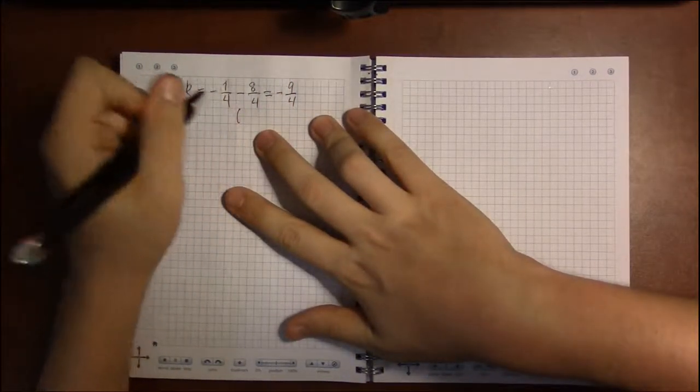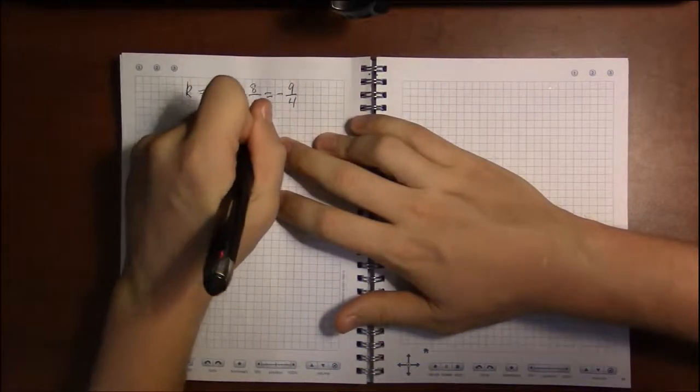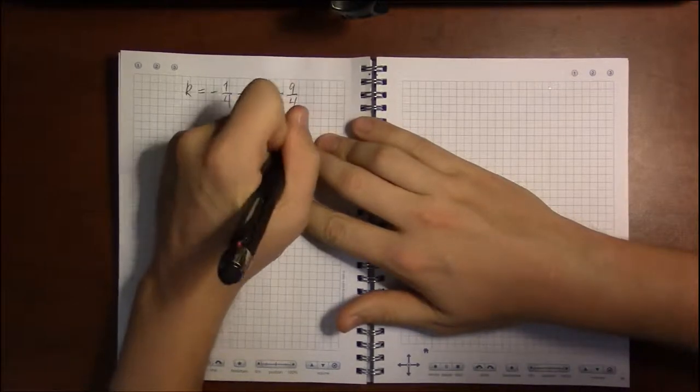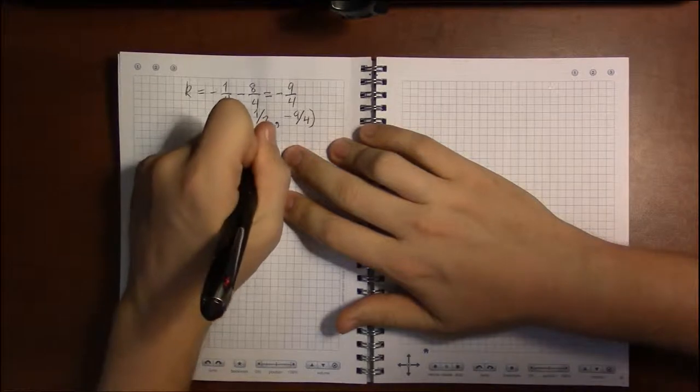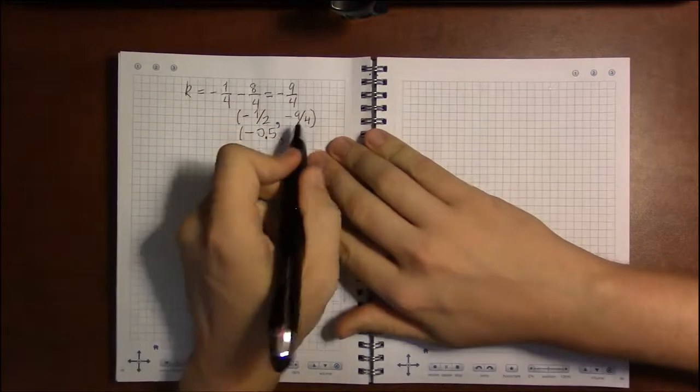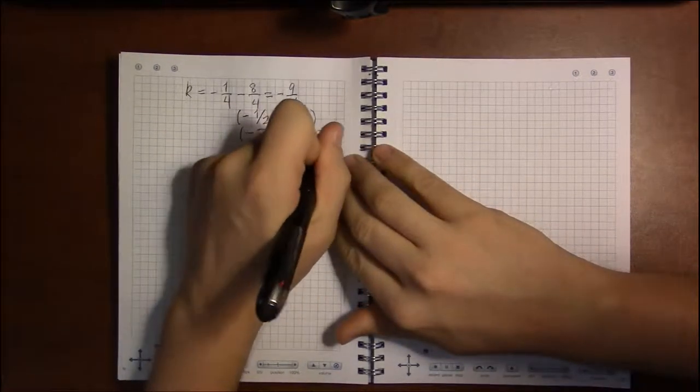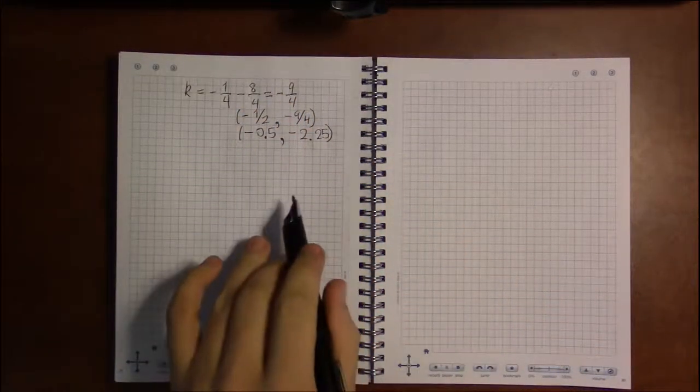So our vertex is the point minus 1 half, comma, minus 9 fourths. And if you prefer, this is minus 0.5, comma, minus 2 and a quarter. That's for part B. That's the vertex.